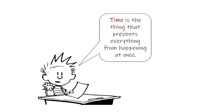Time is one of those things that everybody thinks they know about, but when asked to define it, they usually have a very hard time doing so. One definition of time that I find particularly useful is attributed to either Albert Einstein or Buckaroo Banzai, depending on whom you believe. That definition states that time is the thing that prevents everything from happening at once.